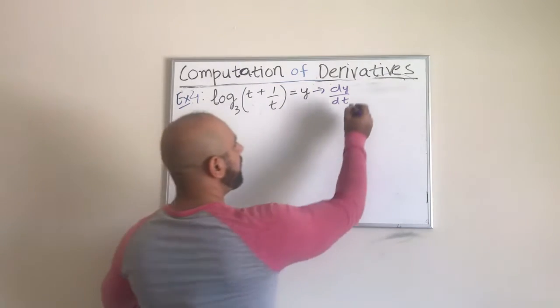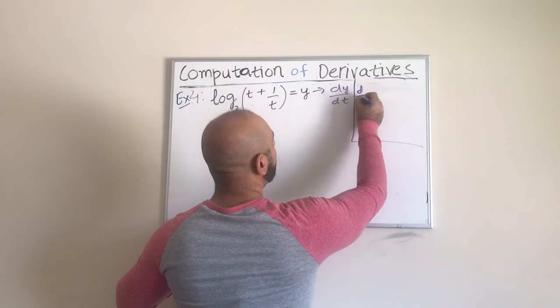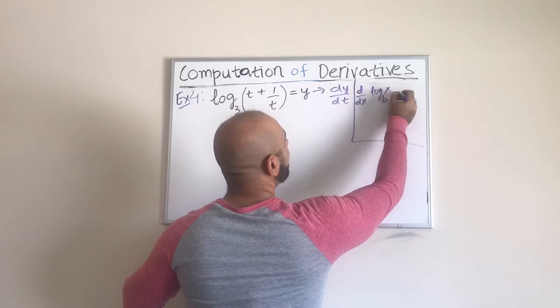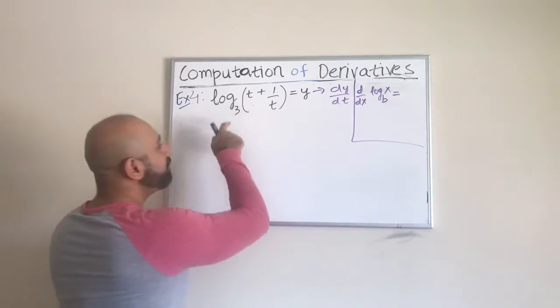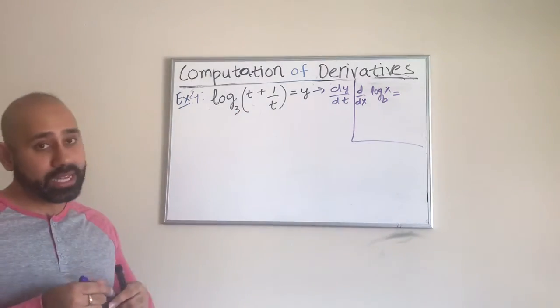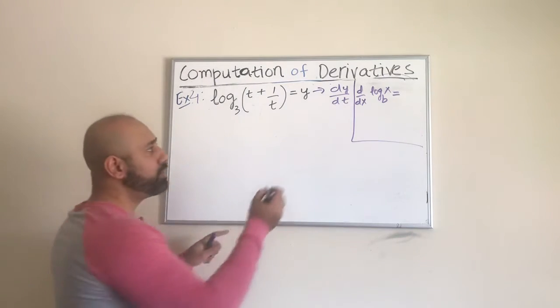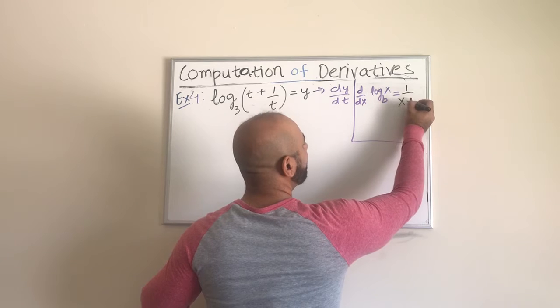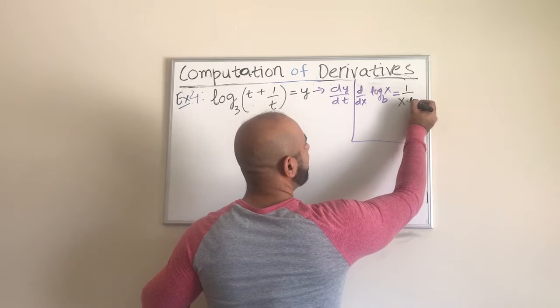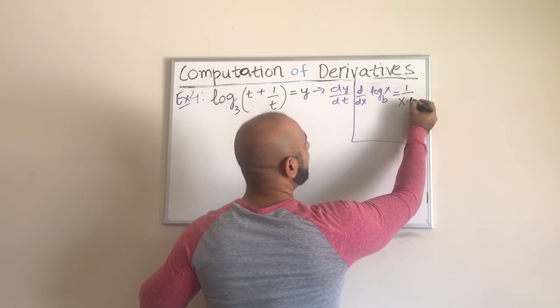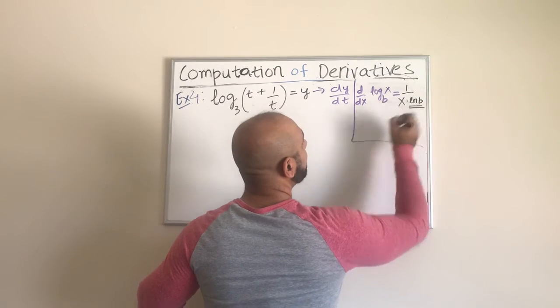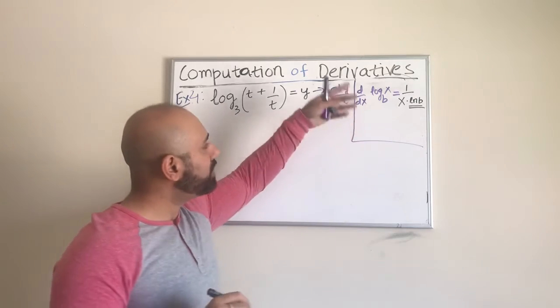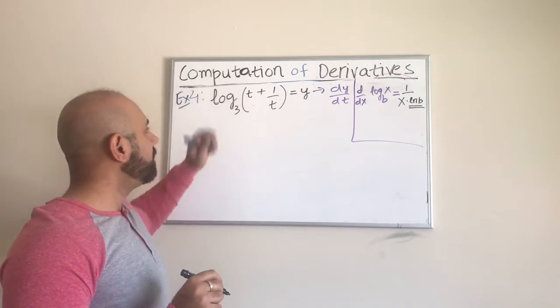Let me quickly remind you that when we have the general form, the d over dx of the log x to the base b, because here we don't have the base e. We have base is 3, which is different than e, so one has to use a slightly different form, which is 1 over x. It is still the inverse function, but you have to do one extra piece or you have to multiply the denominator by the ln of b, which is ln of the base. So let us keep this in mind and use that formula to write the derivative of this.